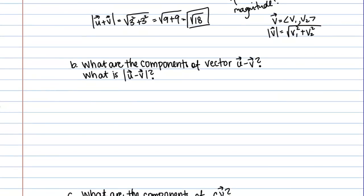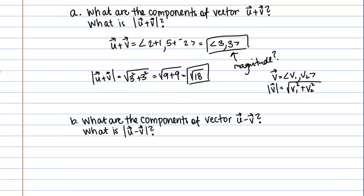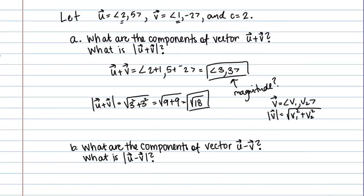Part B asks what are the components of the vector U minus V? Now this is just going to be really exactly the same, except we're going to be subtracting the components instead of adding them.